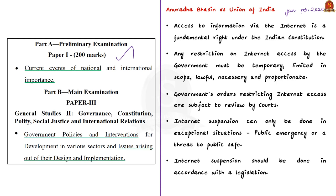In this case, the Supreme Court held that any restriction on internet access by the government must be temporary, limited in scope, lawful, necessary and proportionate. Government can restrict internet access only based on these conditions. In addition, the Supreme Court reiterated that government orders restricting internet access are also subject to review by courts. Internet suspension can only be done in exceptional situations — such as a public emergency or a threat to public safety — and must be done in accordance with legislation.